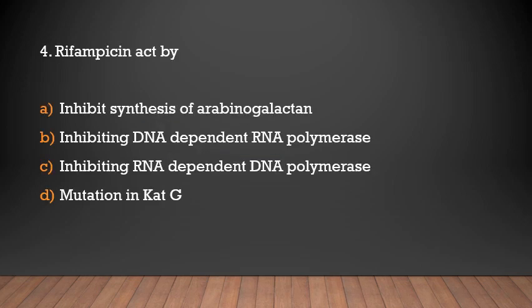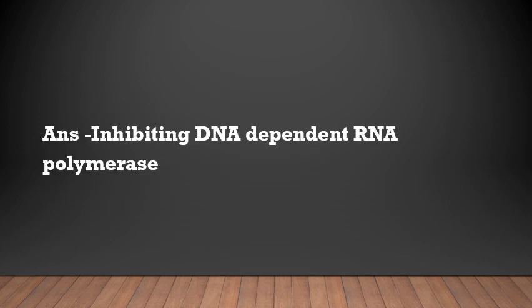Rifamycin acts by which mechanism? Inhibiting synthesis of arabinogalactan, inhibiting DNA-dependent RNA polymerase, inhibiting RNA-dependent DNA polymerase, or mutation of katG? Answer: Inhibiting DNA-dependent RNA polymerase.